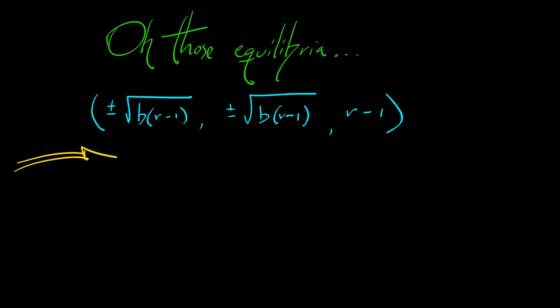So let's start with that pair of equilibria that exist when r is bigger than 1. That is plus or minus square root of b times quantity r minus 1, plus or minus square root of b times quantity r minus 1, and r minus 1. Those are the x, y, and z values.